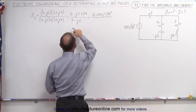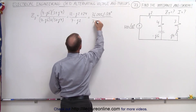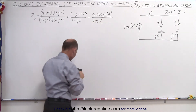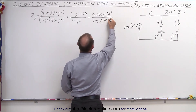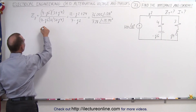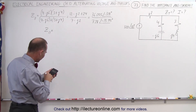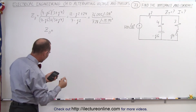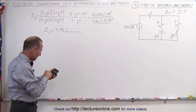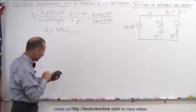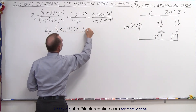We divide that by: in the denominator we have 49 plus 4, take the square root, which is 7.28 for the magnitude, and the phase angle — take the inverse tangent of 2 divided by 7 — gives negative 15.95 degrees. Now when we divide, we get the impedance of the two parallel branches: 36.055 divided by 7.28 gives us 4.95, with a phase angle of negative 3.18 plus 15.95, which is 12.77 ohms.